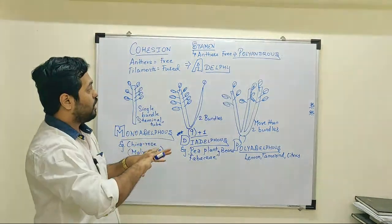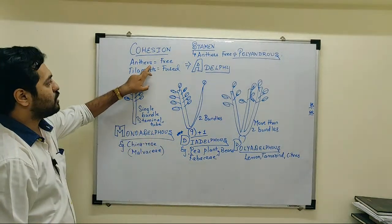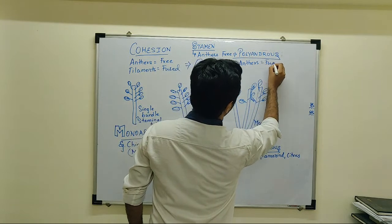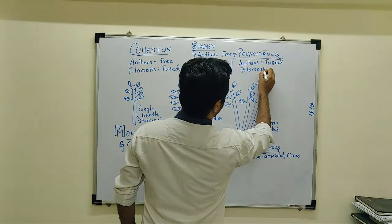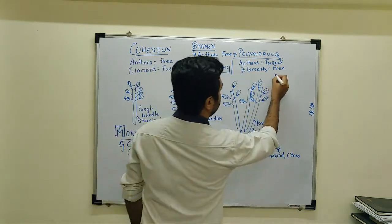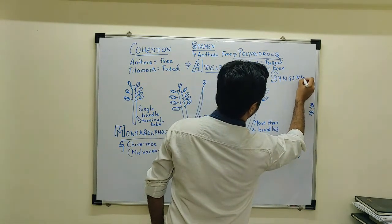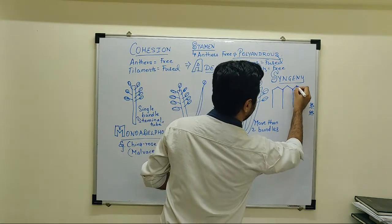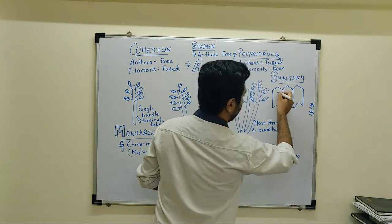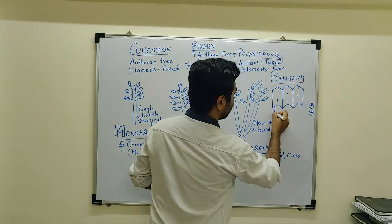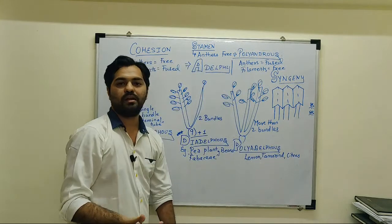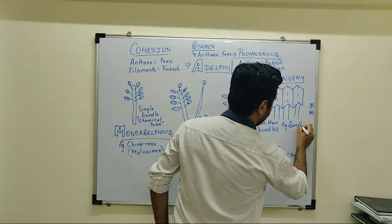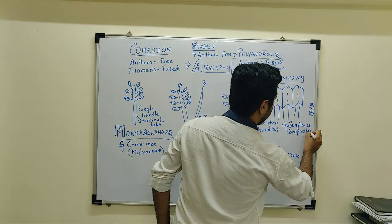This is one type of cohesion of stamen where filaments are fused. A reverse orientation is also seen where the anthers are going to be fused but filaments are going to be free. This is also cohesion of stamen, but this arrangement is known as syngenesious, and such a flower is known as a syngenesious flower. In syngenesious condition the diagram shows a rocket-like structure, which is formed by the anthers — all the anthers are fused, but the filaments are separately represented. This is observed in sunflower or the Compositae family.